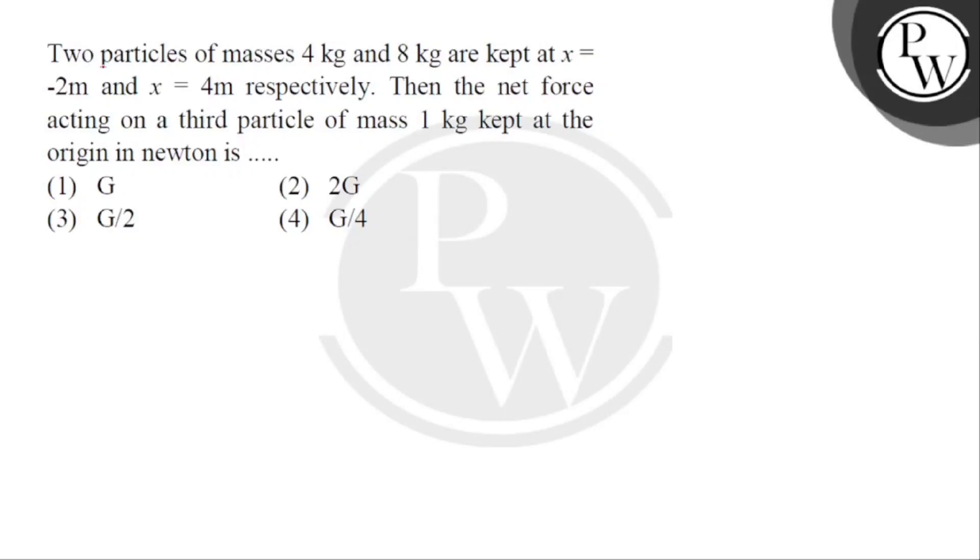Hello, let's read the question. Two particles of masses 4 kg and 8 kg are kept at x equals minus 2 meter and x equals 4 meter respectively. Then the net force acting on a third particle of mass 1 kg kept at the origin in Newton is.